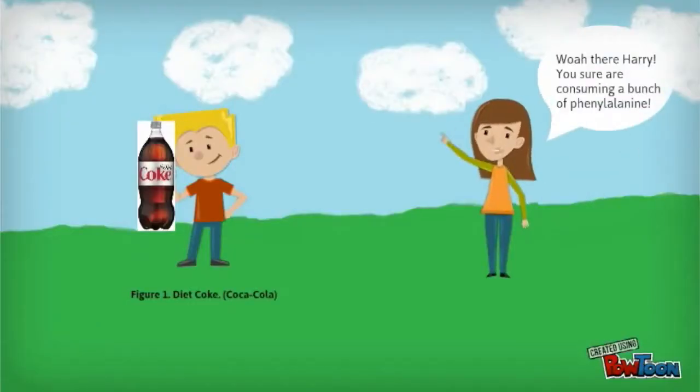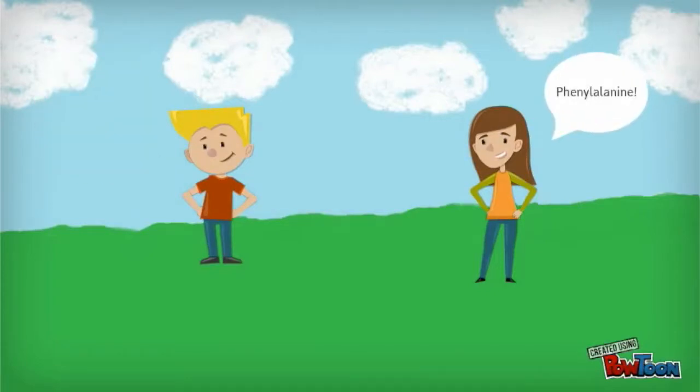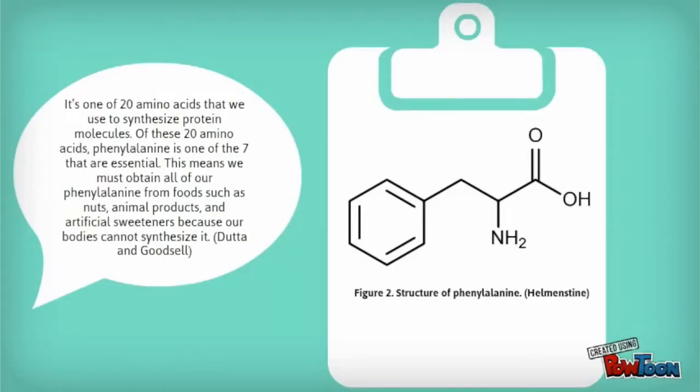Whoa there, Harry. You sure are consuming a bunch of phenylalanine. Phenyl what? All I'm doing is drinking some Diet Coca-Cola. Phenylalanine. It's one of 20 amino acids that we use to synthesize protein molecules. Of these 20 amino acids, phenylalanine is one of the seven that are essential. This means we must obtain all our phenylalanine from foods such as nuts, animal products, and artificial sweeteners because our bodies cannot synthesize it.